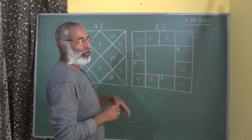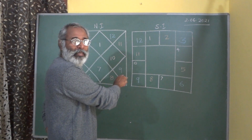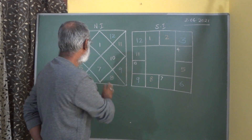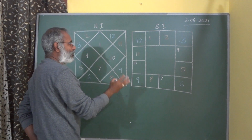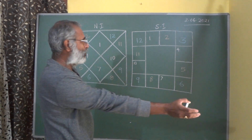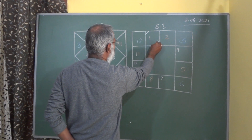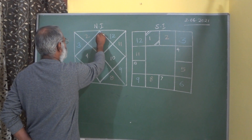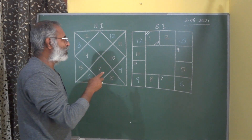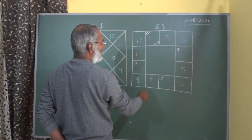Let us now understand what are Kendras and Trikonas. I have taken this as the Kalapurusha chart, that is, Aries is the ascendant as of now. For every other ascendant, it will keep changing and it is applicable. So, the 1st, the 4th — so if this is the ascendant — in the North Indian style, every time this particular house becomes the house of the ascendant.